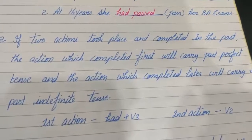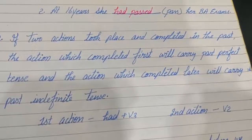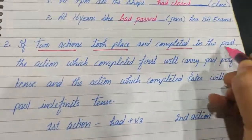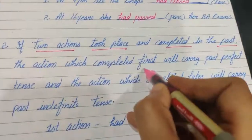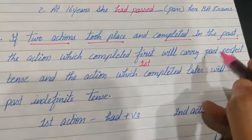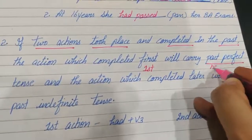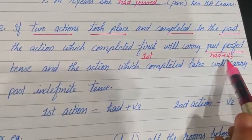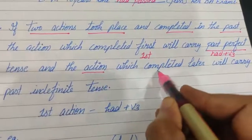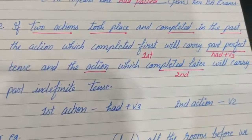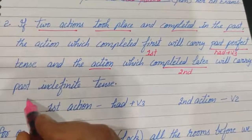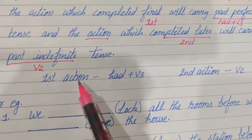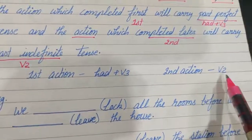Now switch to rule number 2. If 2 actions took place and completed in the past, the action which completed first will carry past perfect, meaning had plus V3. And the action which completed later, we will be using V2.